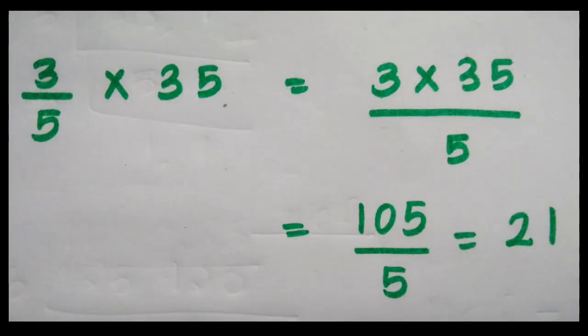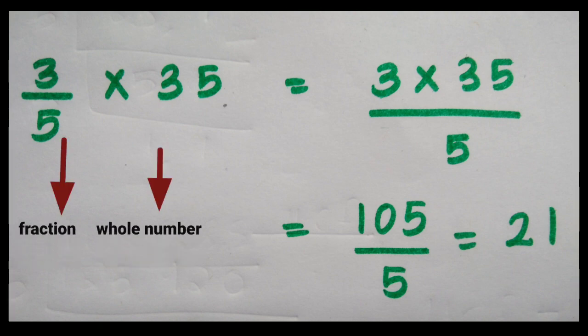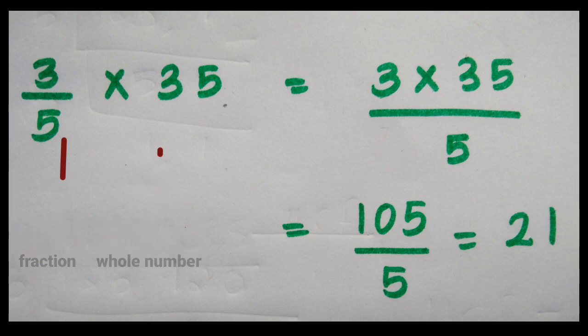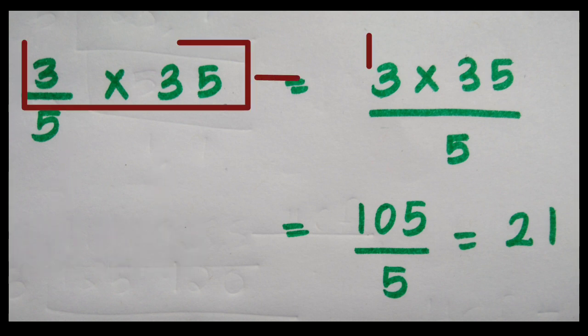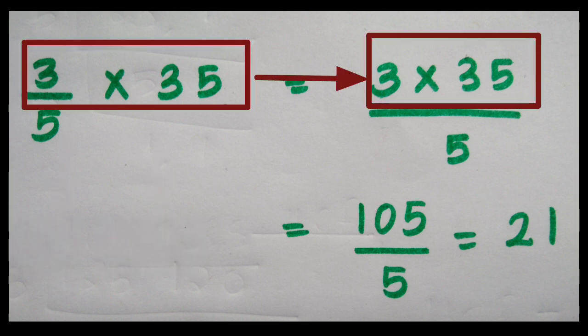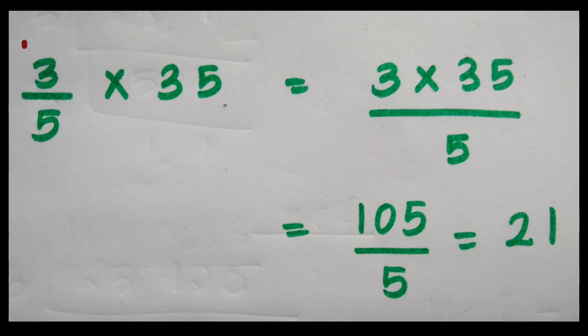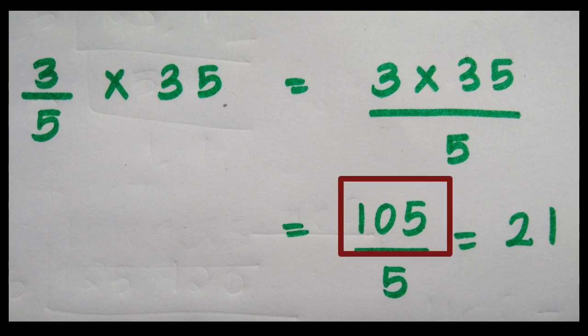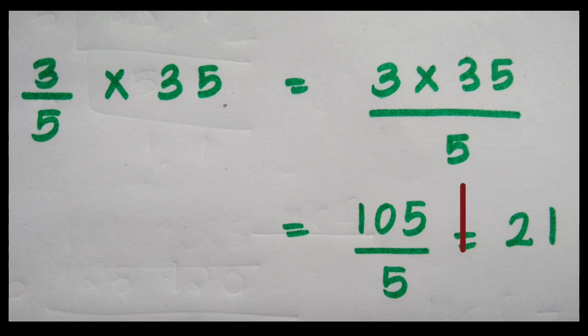Next one: 3/5 multiplied by 35. Here 3/5 is a fraction and 35 is the whole number. Multiply the numerator 3 and 35 — we get 105. Then the same denominator 5. 105 divided by 5 we get 21.